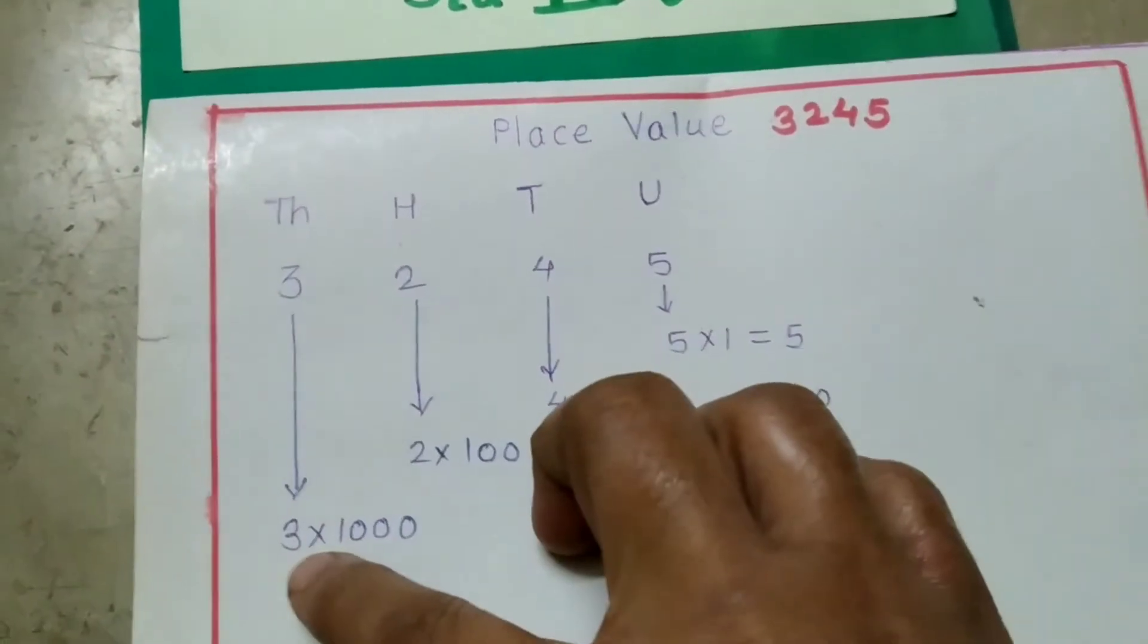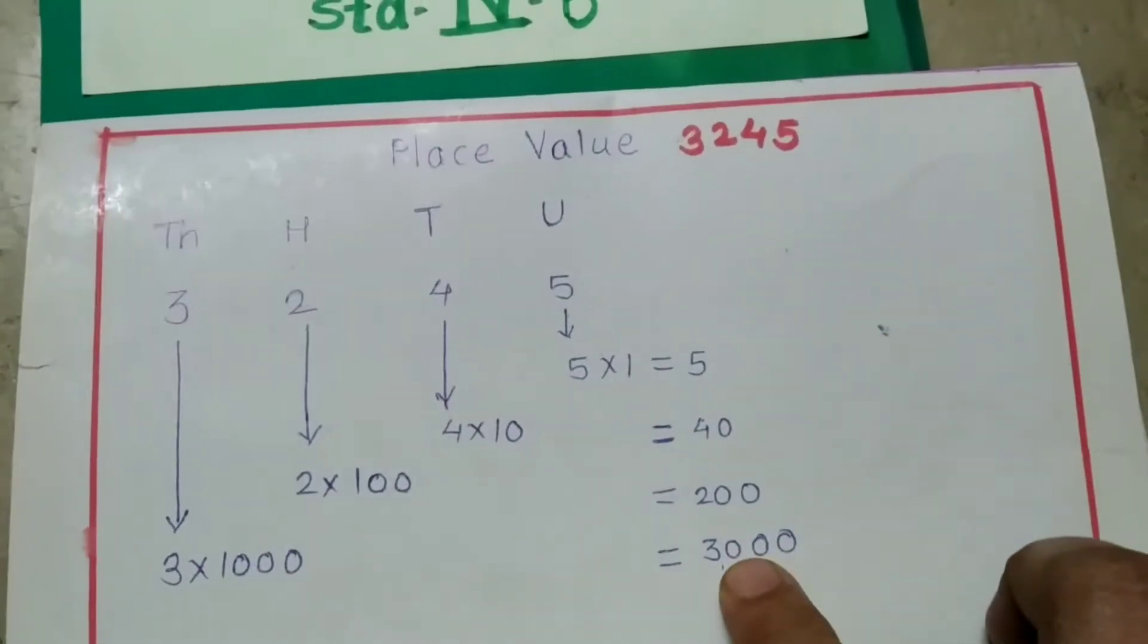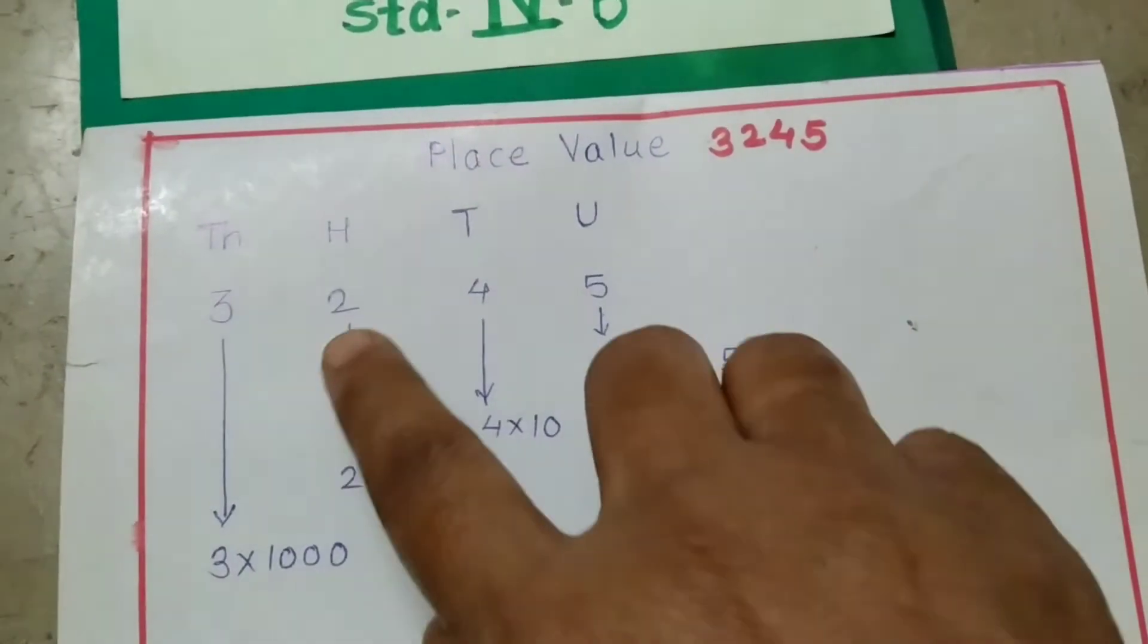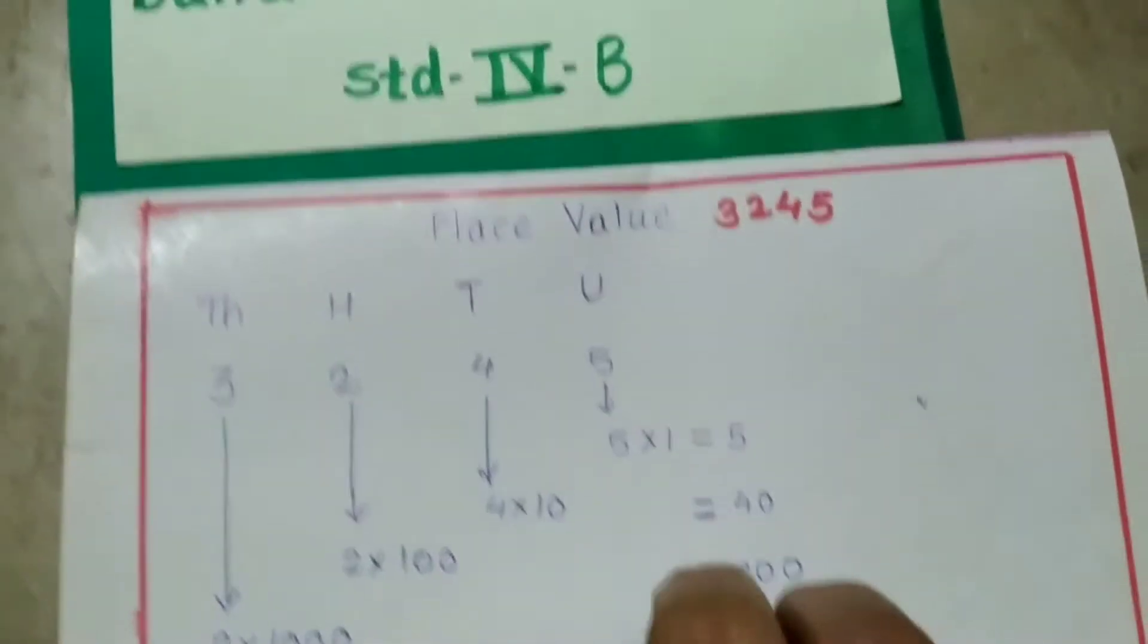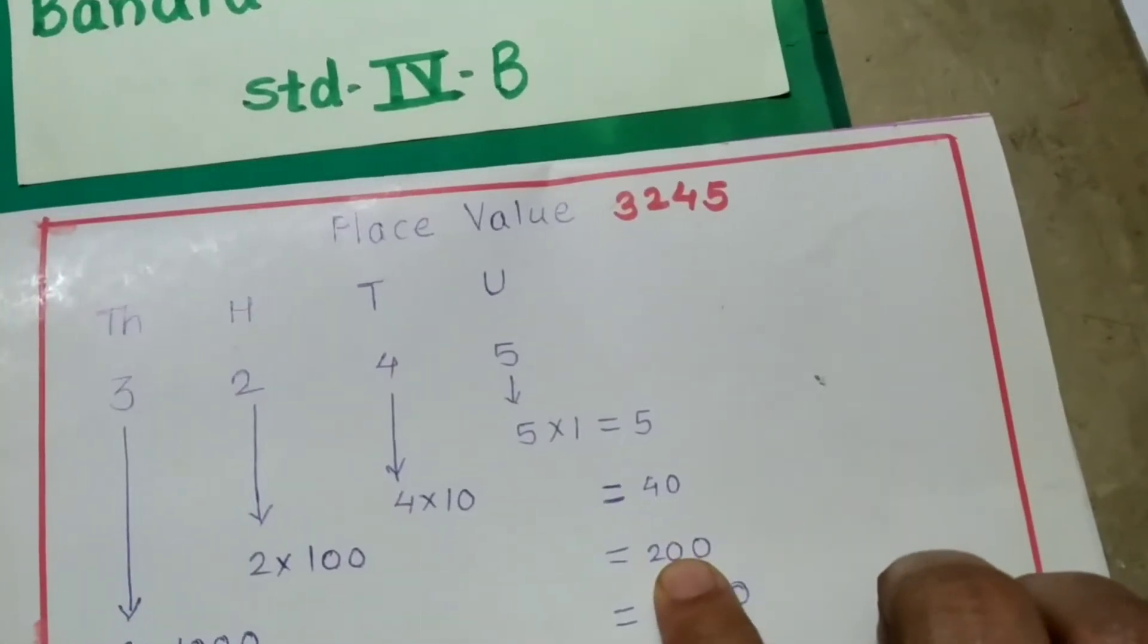So 3 into 1000 is equal to 3000. 2 is in 100 place, so 2 into 100 is equal to 200.